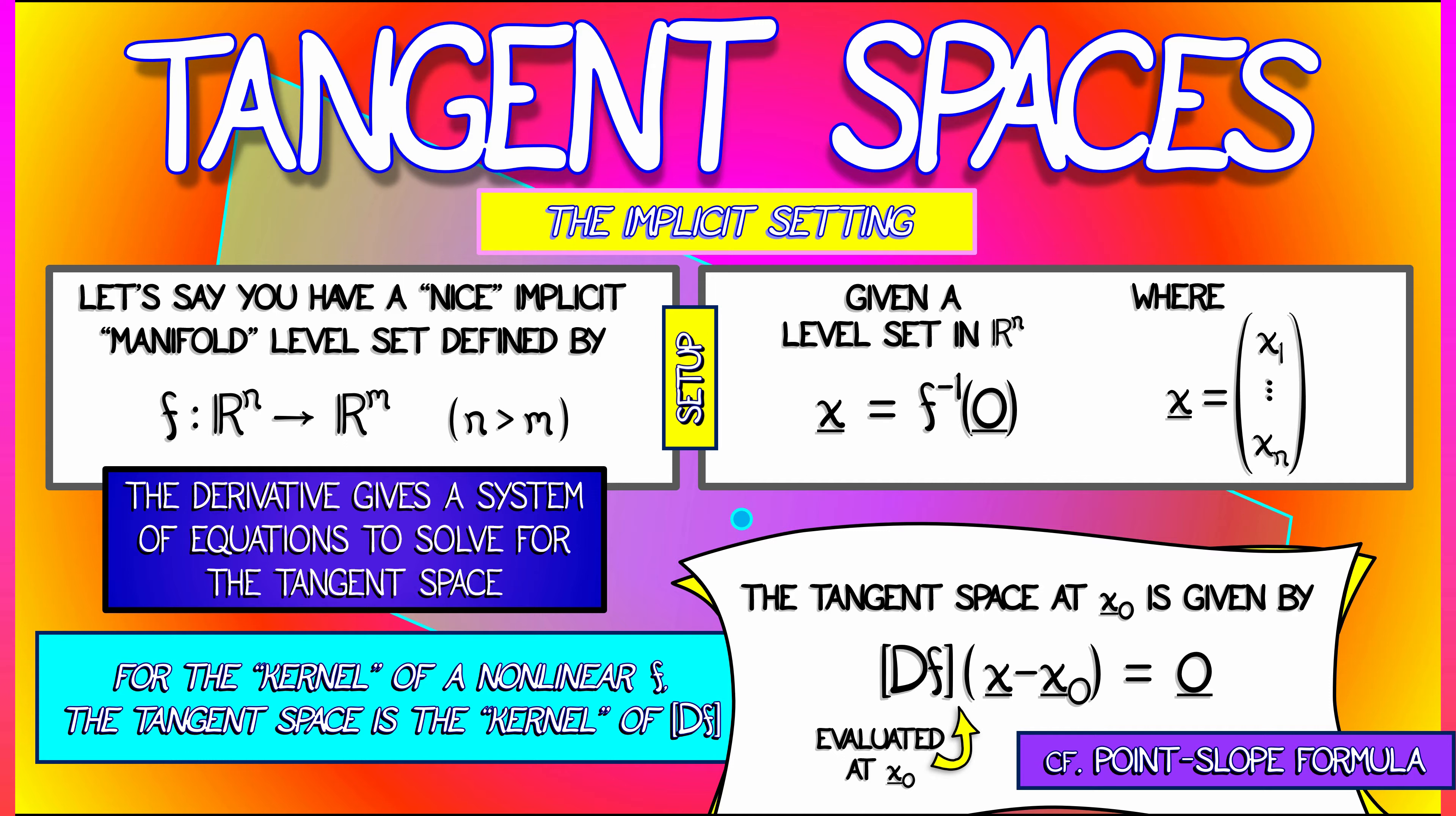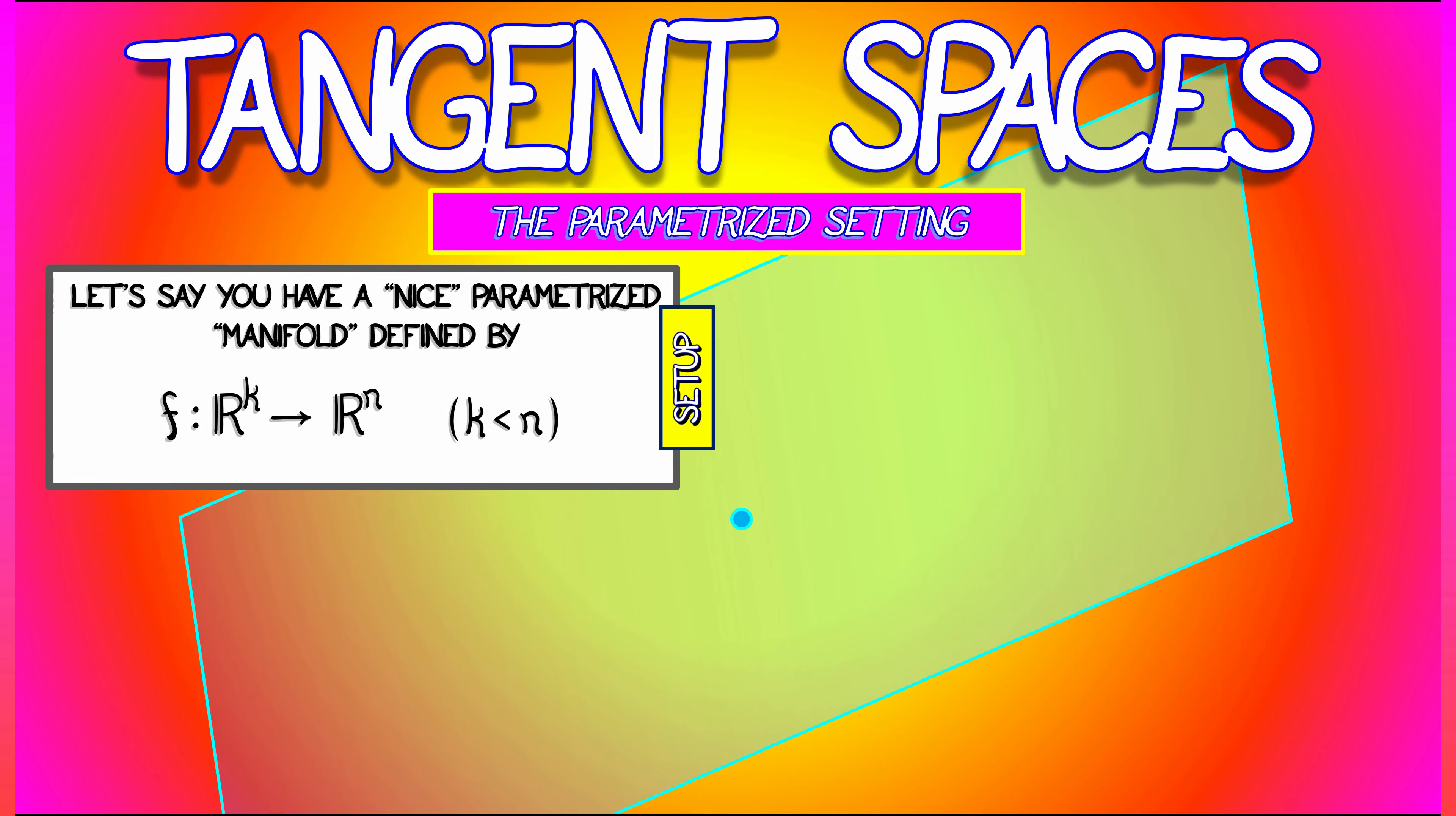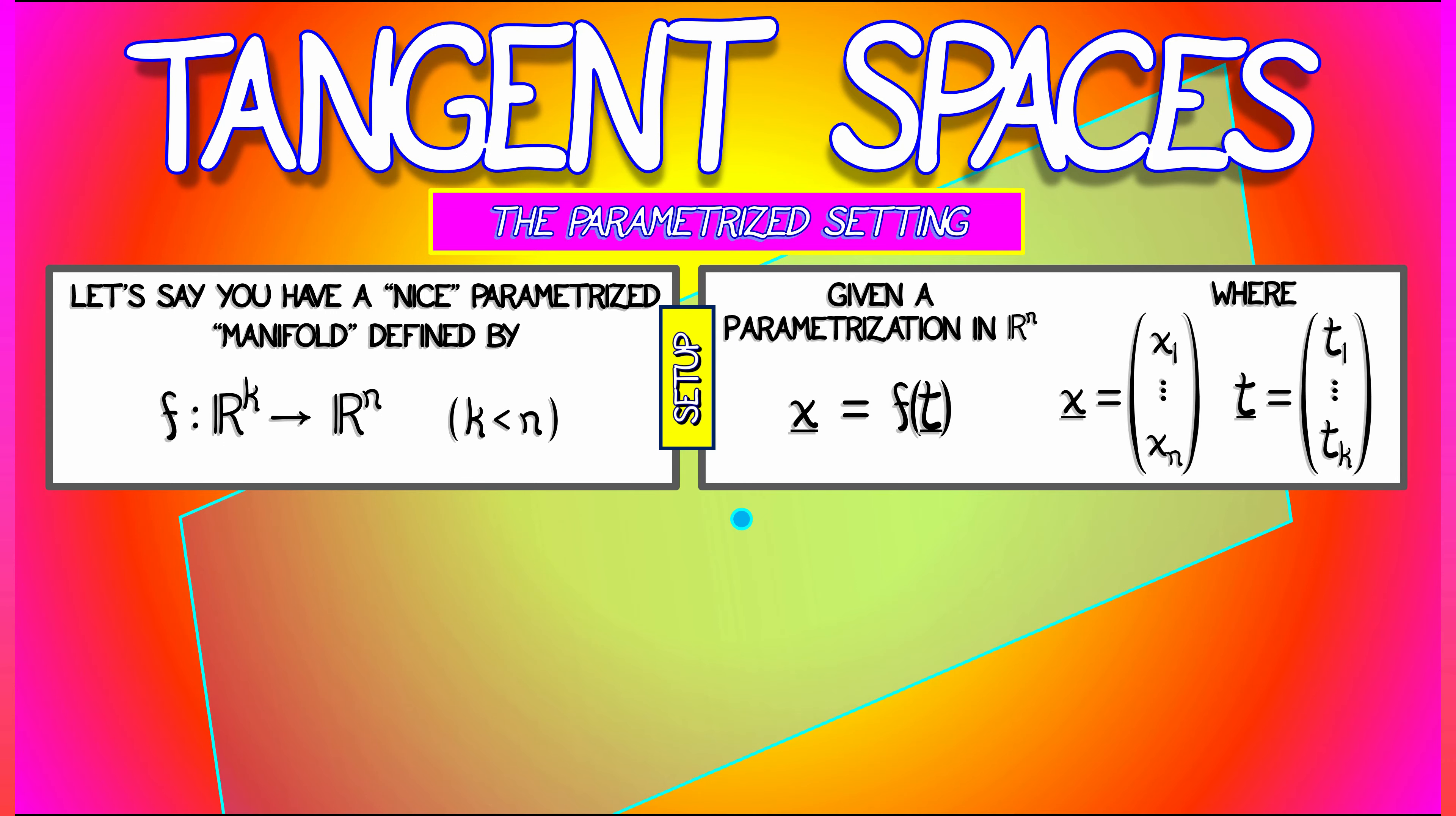Likewise, in the parametrized setting, let's say you have a parametrized space, manifold, something nice, defined by F, where now you have T parameters, T1 up through TK, and N outputs, X1 up through XN. Then, in this case too,